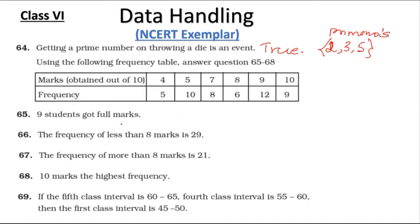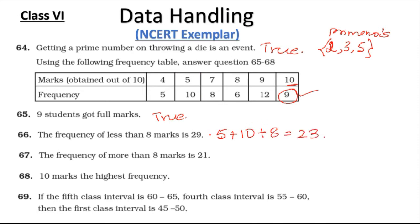Question 65: Nine students got full marks — this statement is true; look at the frequency, there are 9 students who have got full marks. Question 66: The frequency of less than 8 marks is 29 — when we look at less than 8 we consider up to 7, so 5 plus 10 plus 8 is 23. Therefore this statement is false.